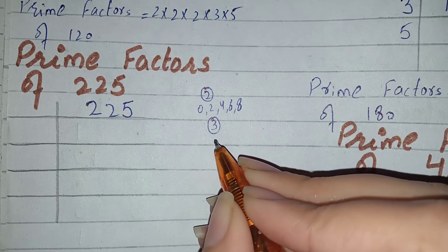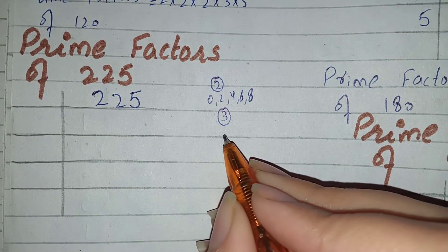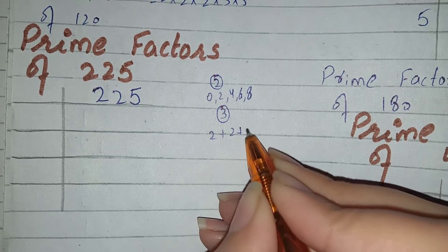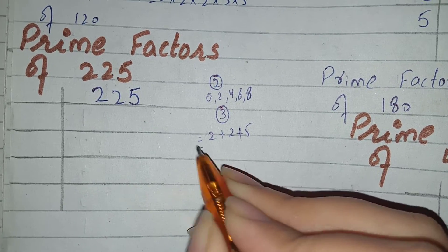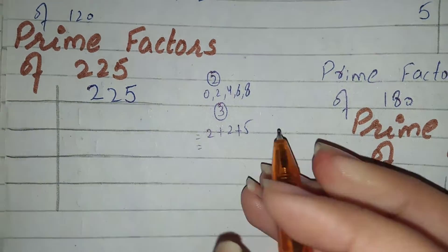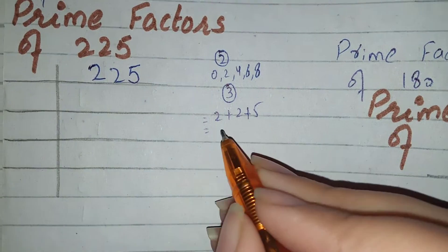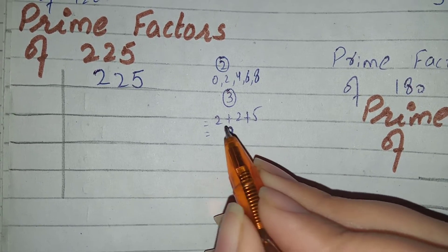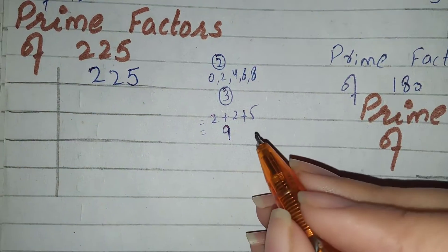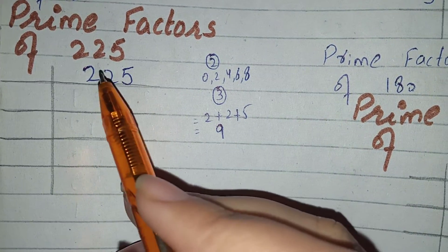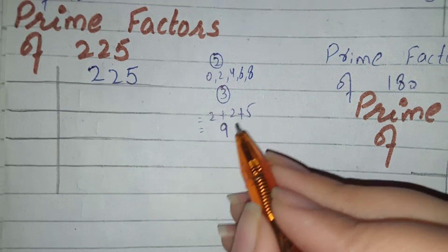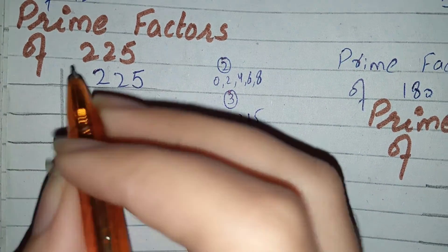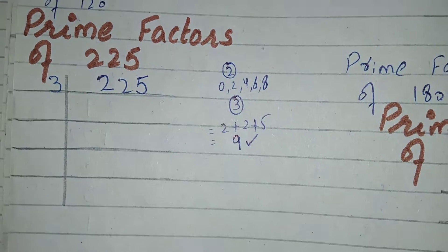Can we take 3 here or not? To check whether the number is divisible by 3 or not, the rule is to add the digits of that number. For 225, we add: 2 plus 2 is 4, 4 plus 5 is 9. If the result is divisible by 3, then the number will definitely be divided by 3. The result is 9, and 9 is divisible by 3, so this number will be divided by 3.